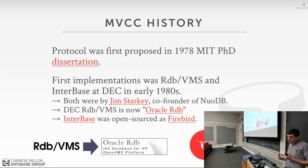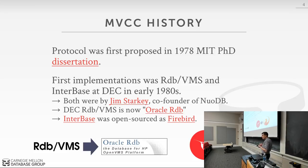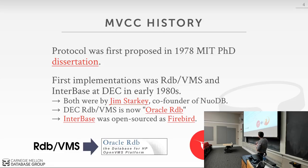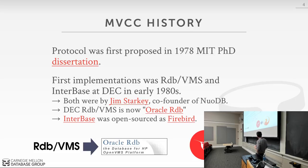The first real implementation wasn't until the early 1980s — 1983, 1984 — at a company called DEC. DEC was a large computer company in the 1980s; they got bought by Compaq, and then Compaq got bought by HP. The first implementation of MVCC in a database system was a product out of DEC called RDB-VMS, the relational database system for VMS. VMS was an old operating system — same family as VAX.